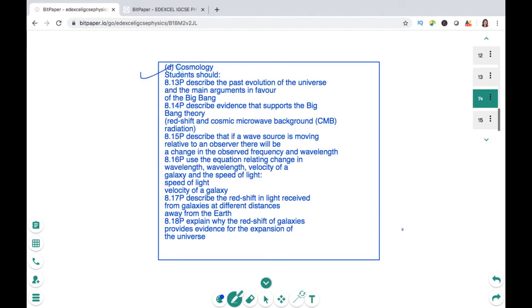In the end, we'll look at how the universe evolved with two important theories: the Big Bang theory and what are the evidences, which are redshift and CMB, which is cosmic microwave background radiation.